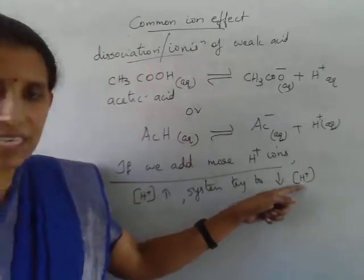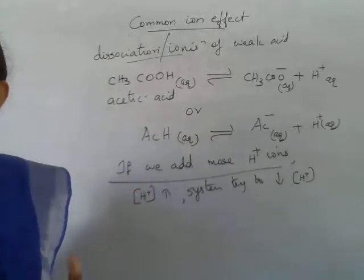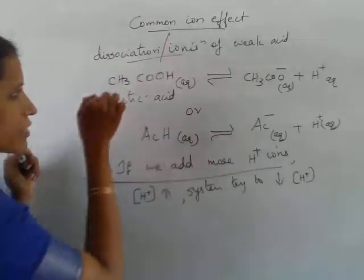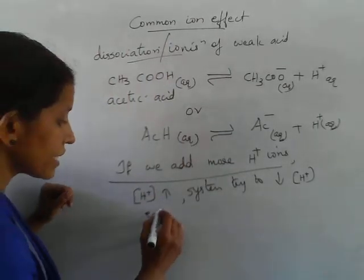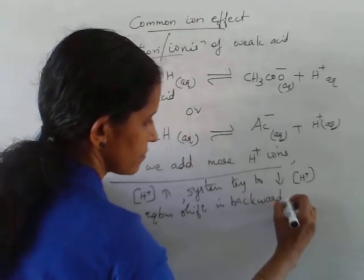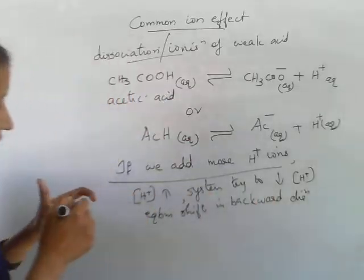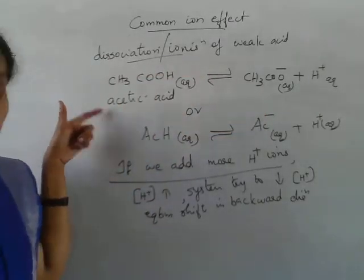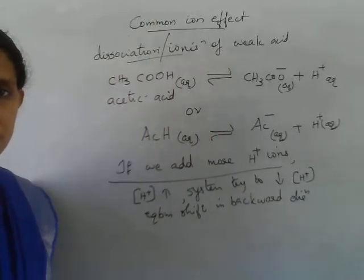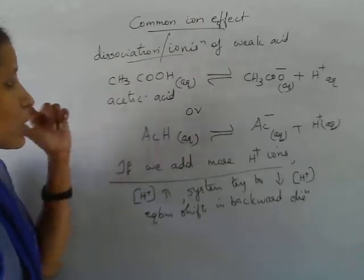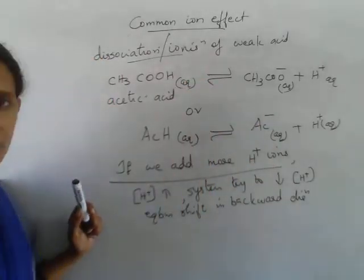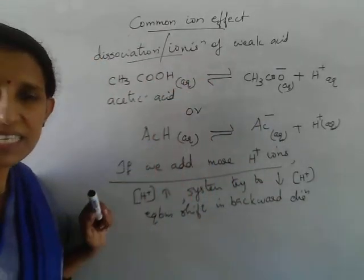In order to decrease H plus concentration, the reaction should proceed in the backward direction. In the backward direction, H plus gets converted back to acetic acid. So the equilibrium shifts in the backward direction, towards the formation of acetic acid. As a result, the forward reaction — the dissociation or ionization of acetic acid — decreases.